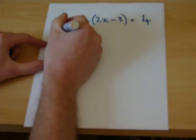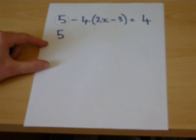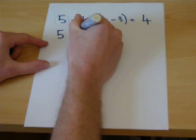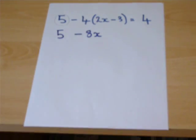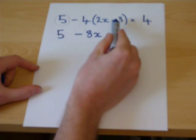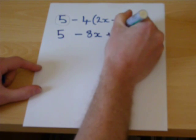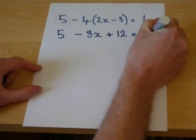We leave the 5 in place, and then minus 4 lots of 2x is minus 8x. Then be very careful. Minus 4 times minus 3 goes to plus 12, and that still equals 4.